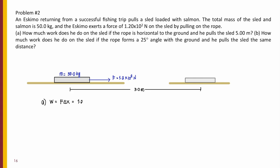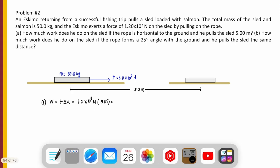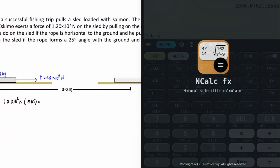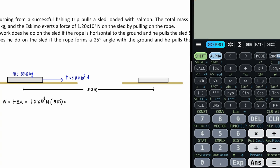work is simply equal to F times delta X. That is equal to 1.2 times 10 to the power of 2 newtons times 5 meters. Let's compute that using your calculator. 1.2 times 10 to the power of 2 times 5. And that is 600 newtons.